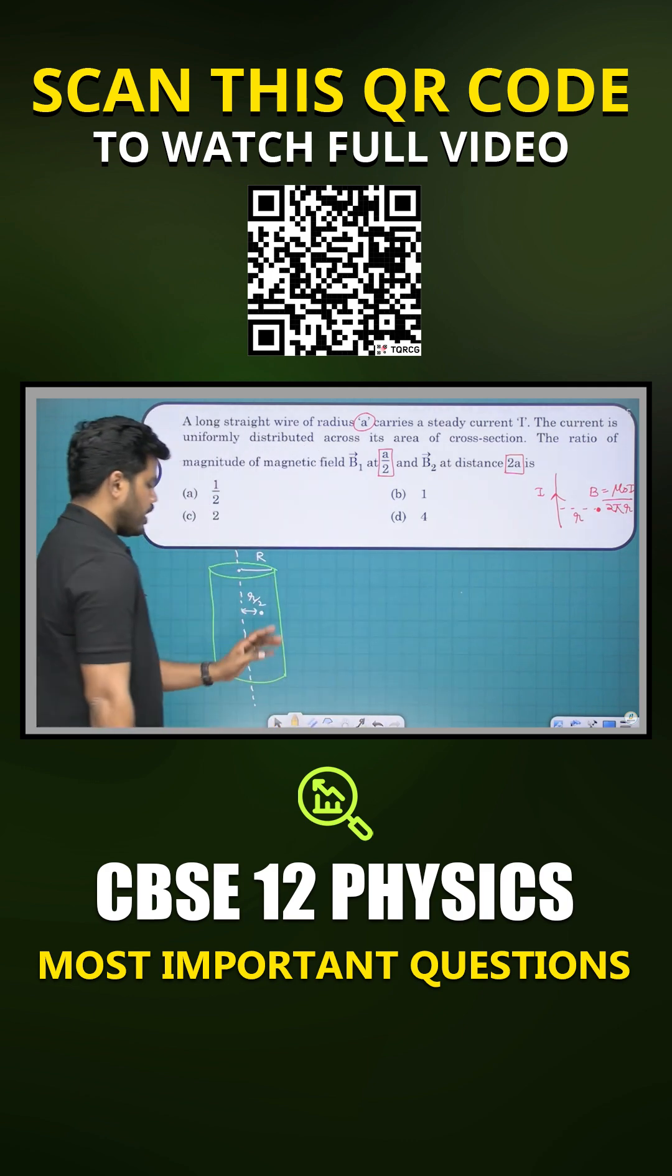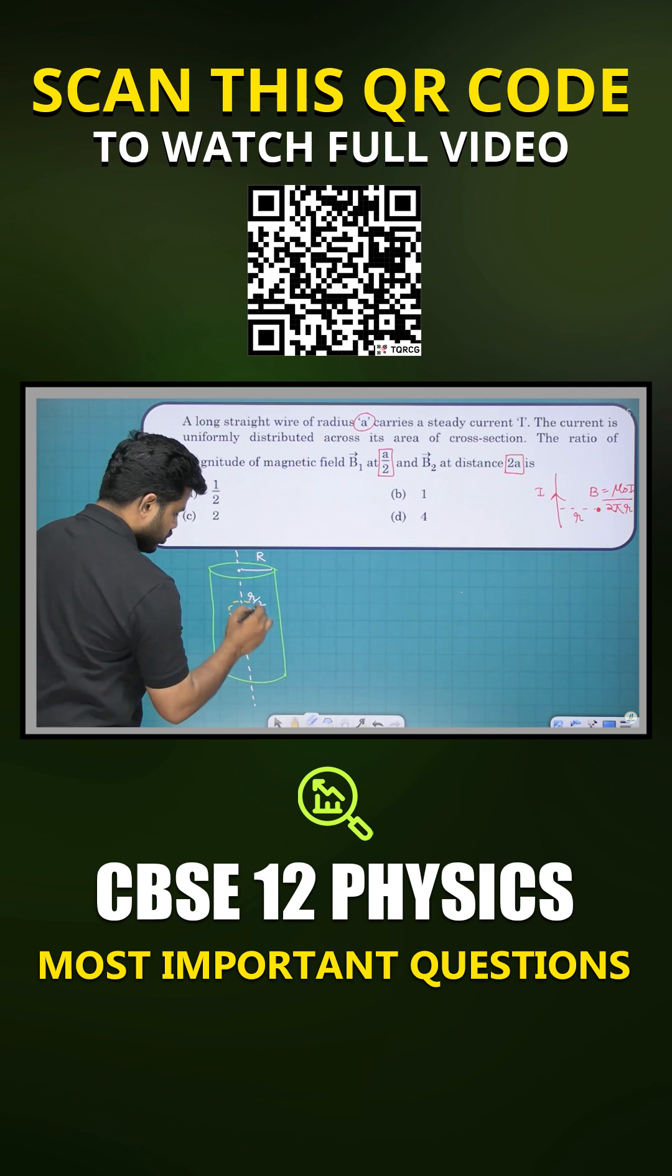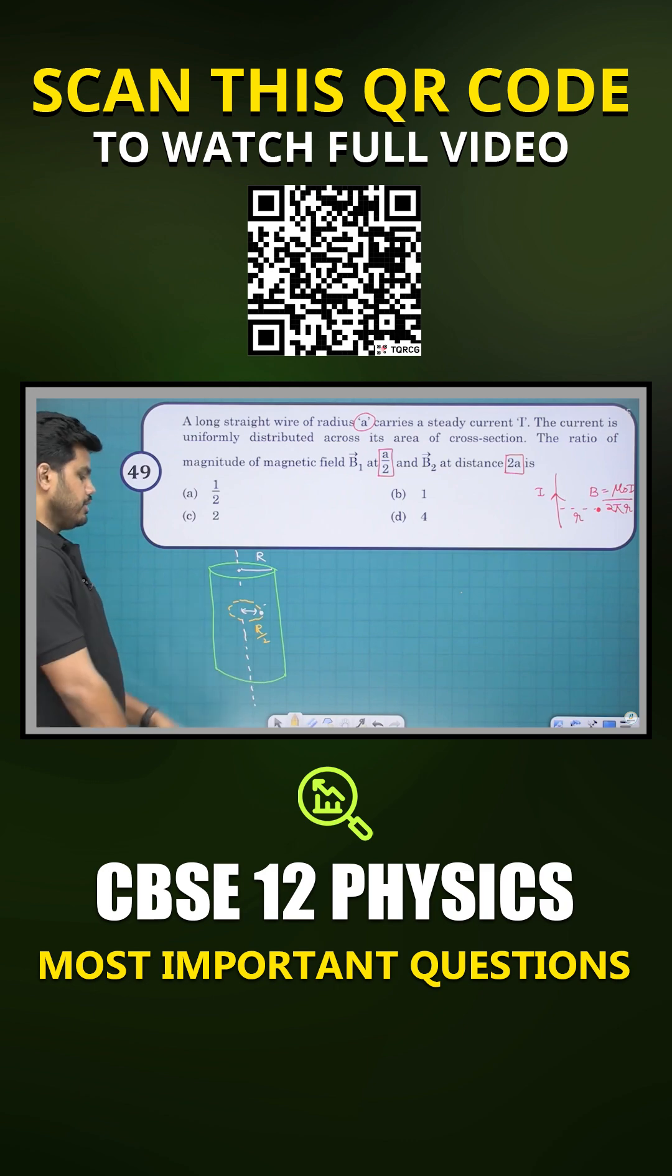So how will we find out the magnetic field at that point? We have to imagine an Amperian loop. We have to imagine an Amperian loop of radius R by two. This distance is going to be capital R by two because radius is taken as capital R.